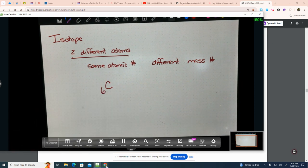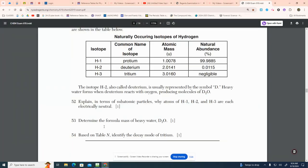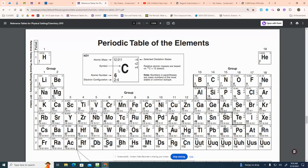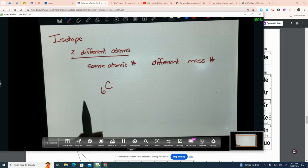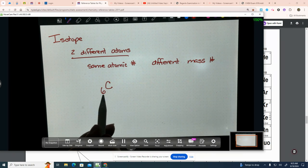So if you don't remember that, we're going to go over to our reference tables and you're going to look at carbon. And in the lower left-hand corner, there's a number six right there. That's this number. That's the atomic number.